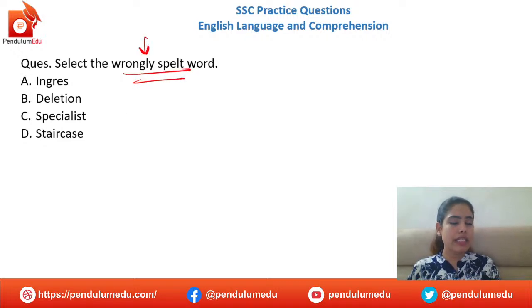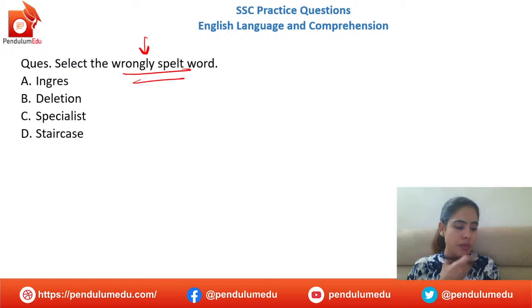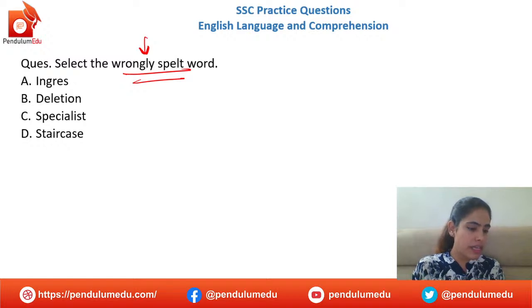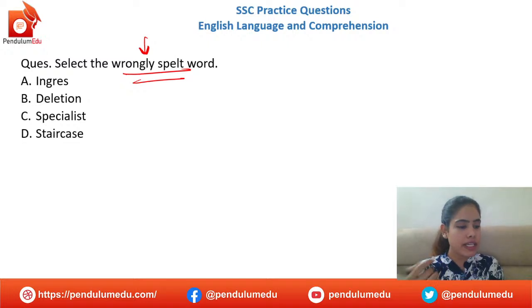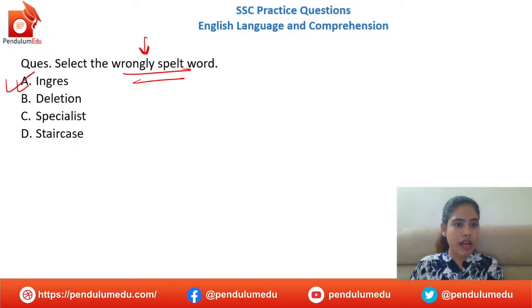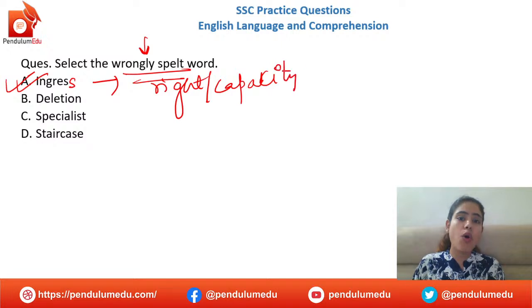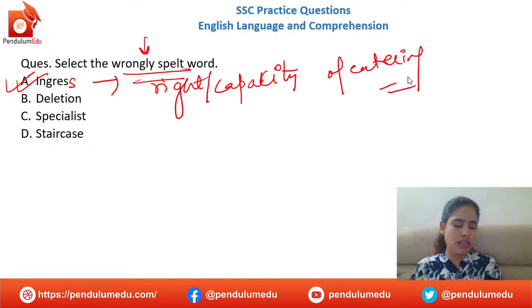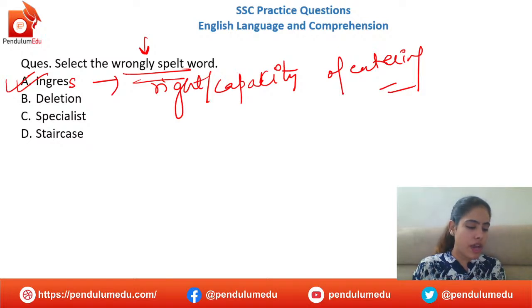Incorrectly spelled word: ingress, deletion, specialist, staircase. The answer is option A — 'ingress' requires double S. 'Ingress' means the right or capacity of entering into some place or situation. Everyone is correct — option A is the incorrectly spelled word.